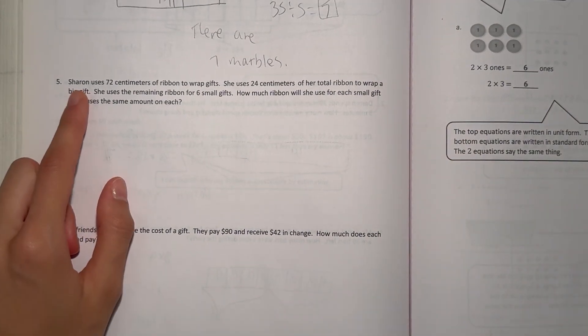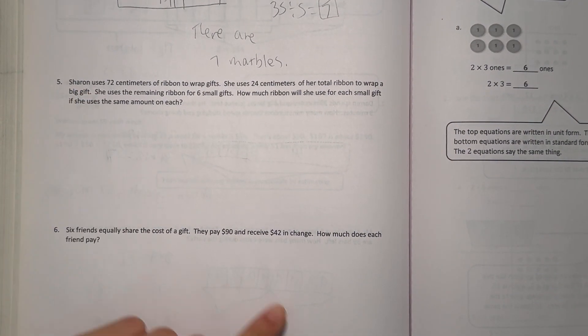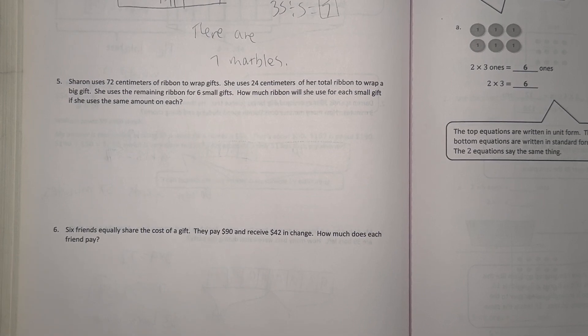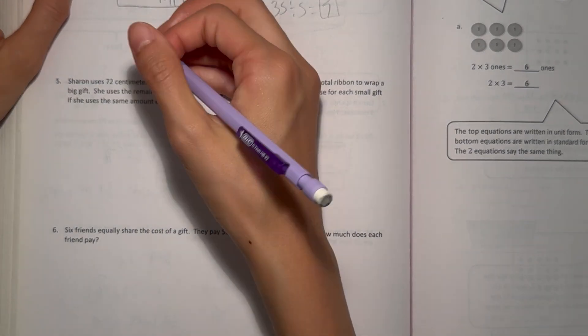And number 5. Shin uses 72 centimeters of ribbon to wrap gifts. She uses 24 centimeters of her total ribbon to wrap a big gift. She uses the remaining ribbon for 6 small gifts. How much ribbon will she use for each small gift, if she uses the same amount on each?